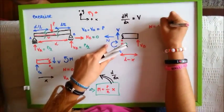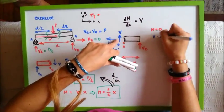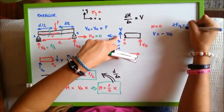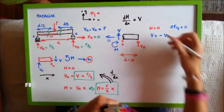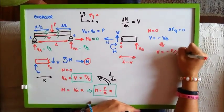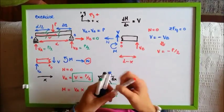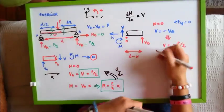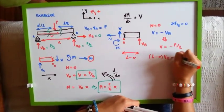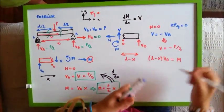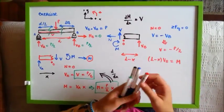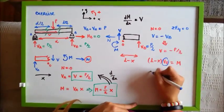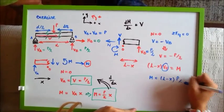N equals 0. Now, from the sum of forces in the y direction, V equals minus VB, and the equilibrium equation on the y direction has to be 0, so from here we know that V equals minus P over 2. Now for the torques — taking the positive direction, L minus x times VB has to equal the moment, so M equals (L minus x) times VB. Since VB equals P over 2, M equals (L minus x) times P over 2.